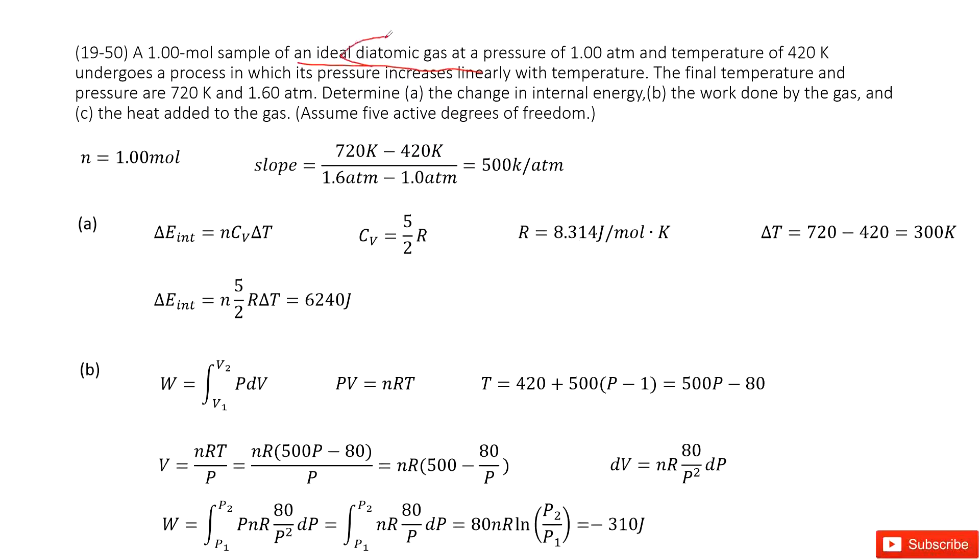So the keyword is diatomic. And the molar number is one mole. We write it there. And we know the temperature changes from 420K to 720K. The pressure changes from 1 atm to 1.6 atm and it increased linearly. So linearly tells us the slope we can find is 500K per atm.